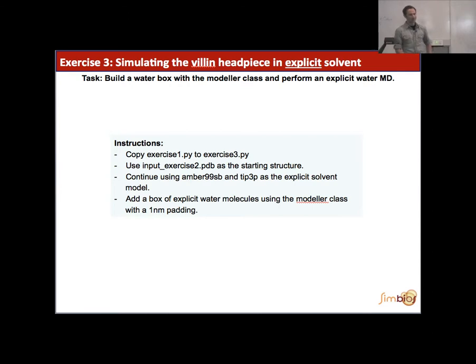Now let's do the whole thing in explicit solvent. Why don't we? So we take the same PDB file from exercise two, but just to keep exercise2.py, let's copy exercise1.py into exercise3.py. And we continue using the Amber99SB force field. And we also use the TIP3P water model. So now what we have to do is the third picture of that modeler slide that I showed, where we go from a crystal structure to a crystal structure with added hydrogens to a crystal structure with added hydrogens in a water box. That's what the modeler class will specify in this particular example. And why don't we add one nanometer padding around our protein while we're at it? So that's for the water box.